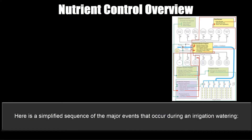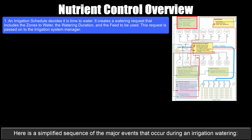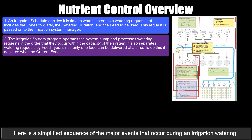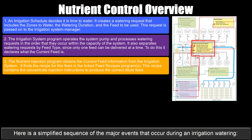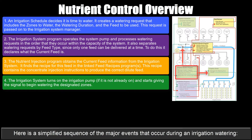Here's a simplified sequence of major events during an irrigation watering. An irrigation schedule decides it's time to water and creates a watering request that includes the zones to water, the watering duration, and the feed to be used. This request is passed to the irrigation system manager. The irrigation system program operates the system pump and processes watering requests in the order they occur within system capacity. It separates watering requests by feed type since only one feed can be delivered at a time, and declares what the current feed is. The nutrient injection program obtains the current feed information, finds the recipe in the linked feed recipes program, and that recipe contains the concentrate injection instructions to produce the correct dilute feed. The irrigation system then turns on the pump and signals to begin watering designated zones.